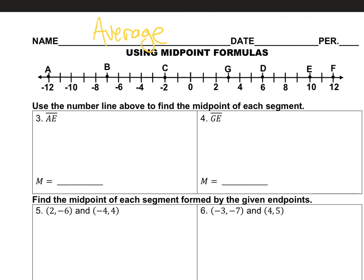Why am I talking about average? Figuring out midpoint in today's lesson is exactly like average. We take the two endpoints, we add them together, and we divide by two. So you guys have done this — you know this. Let's do this first problem. My endpoints are segment AE, so my endpoint is A, and my other one is E.